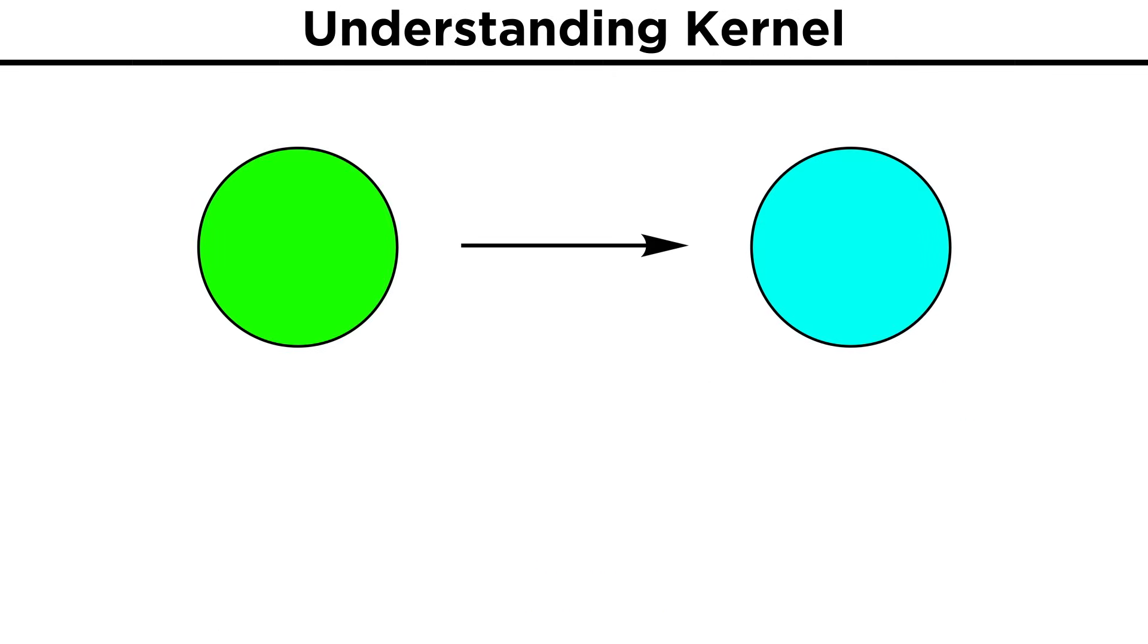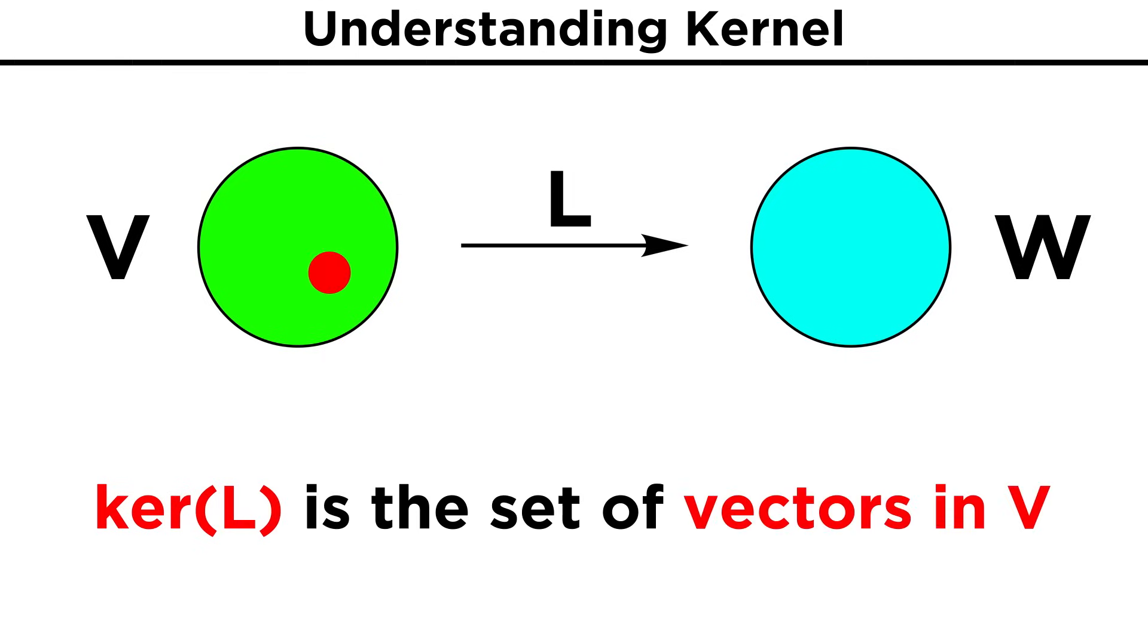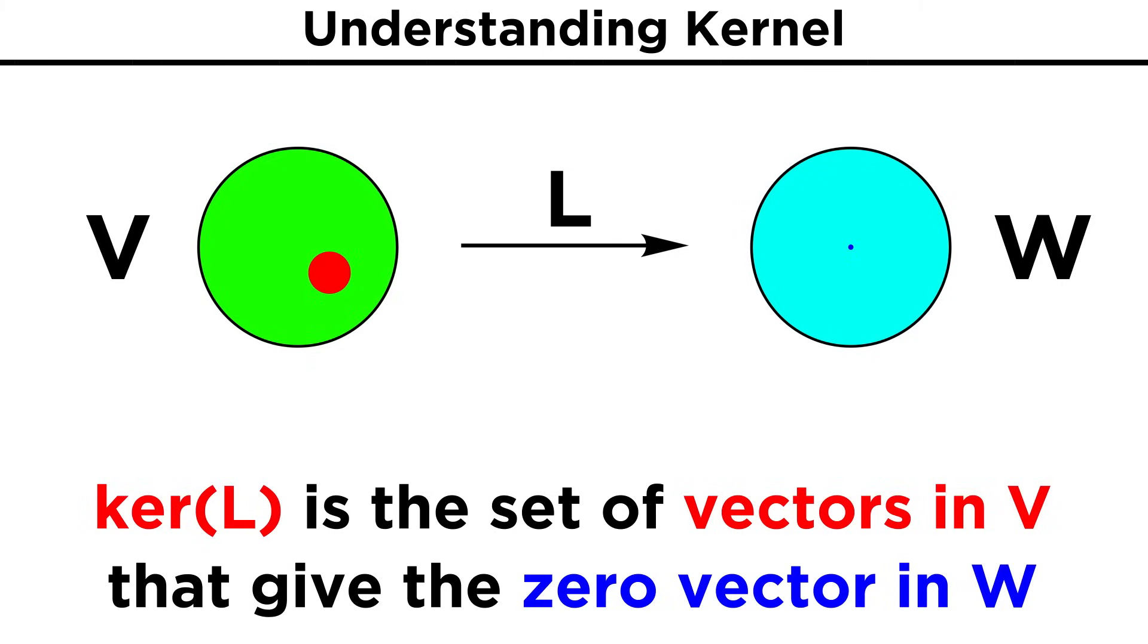Now let's move on to kernel. Keeping in mind the fact that our linear transformation maps from V to W, the kernel of L, denoted as shown, is the set of vectors in V that when transformed become the zero vector in W. To keep zero vectors distinct, we will write the zero vector from V as zero sub V, and the zero vector from W as zero sub W.